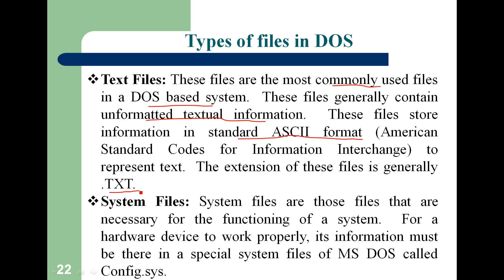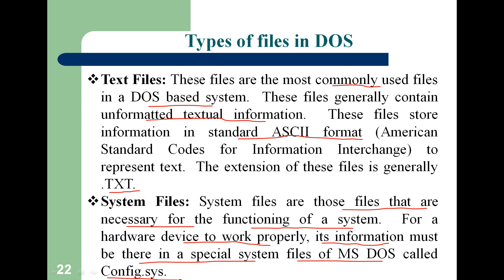Next are system files — these are very important files necessary for the functioning of the system. For a hardware device to work properly, its information must be present in a special MS-DOS system file, which is config.sys. If you want to use any hardware device, the information of that device must be there in the MS-DOS system files — specifically config.sys.